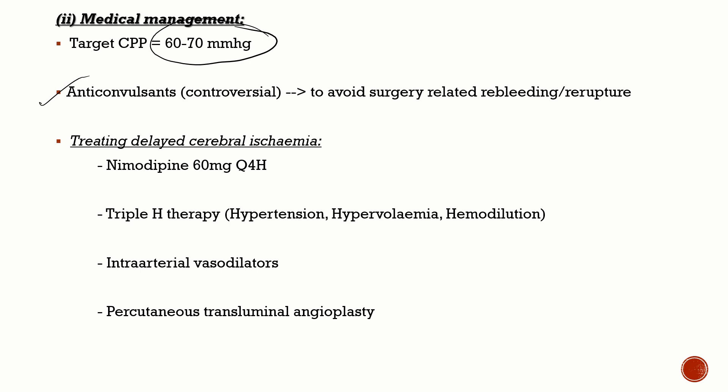For medical management of SAH, the target cerebral perfusion pressure is 60 to 70 mmHg. Anticonvulsants are controversial — they are not generally recommended, but most centers give them to avoid seizure-related re-bleeding or re-rupture, since a seizure significantly increases the risk of re-bleed.